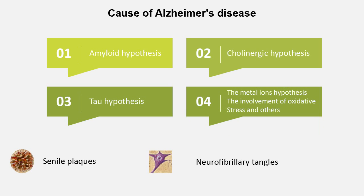But what causes Alzheimer's disease? There are numerous hypotheses regarding Alzheimer's disease pathogenesis, including formation and metabolic disorders of amyloid beta, the cholinergic hypothesis, abnormal tau protein phosphorylation, the metal ions hypothesis, the involvement of oxidative stress, and others.